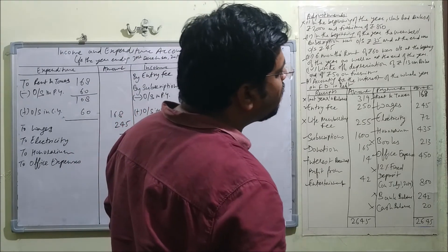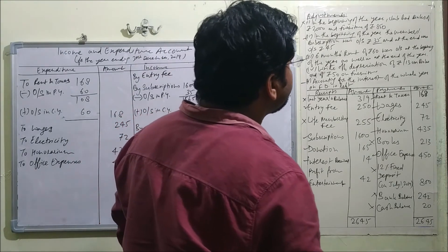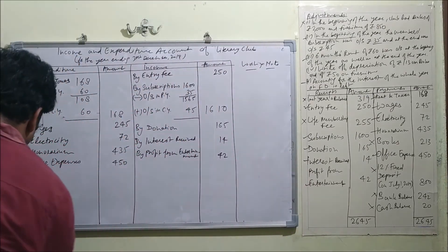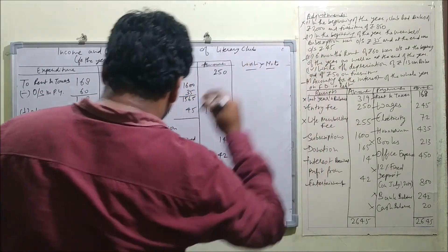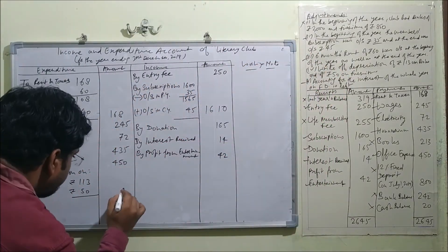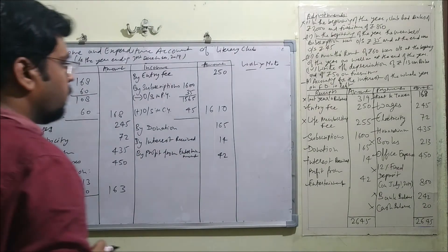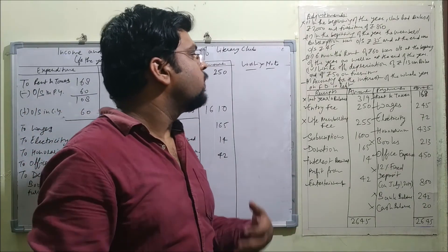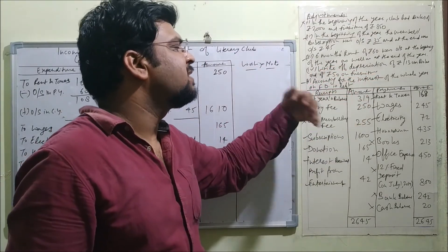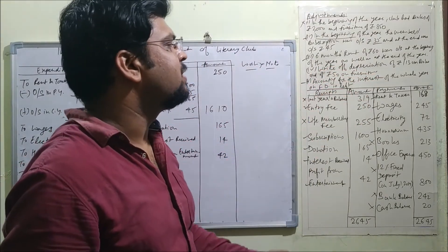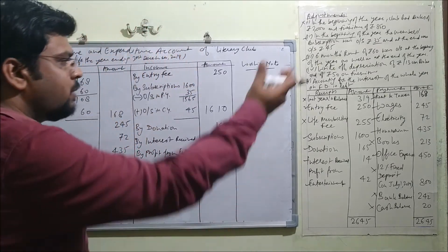The next adjustment is to write off depreciation of ₹113 on books and ₹50 on furniture, giving a total depreciation of ₹163 as an expense. In other questions, depreciation may be given as a percentage rate — for example, 10% — just as you did in 11th standard.